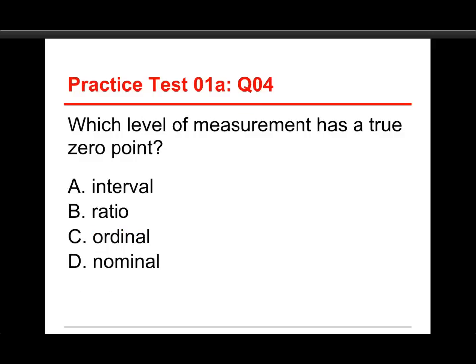Number four: which level of measurement has a true zero point? The choices are interval, ratio, ordinal, and nominal. The answer is B, ratio. Nominal places people into different categories. Ordinal puts those categories or scores in order. Interval specifies how far apart each score is. Ratio adds a true zero point, so nominal contains the least information, ratio contains the most, and the true zero is characteristic of ratio level of measurement.